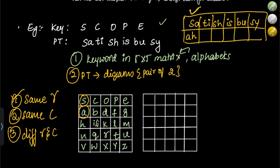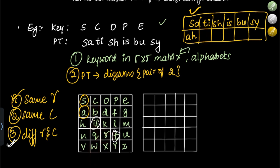For the pair T and I: T is here, I is here — different row and different column. For I, take the letter in I's row at T's column, which is L. For T, take the letter in T's row at I's column, which is Q. So TI encrypts to LQ.